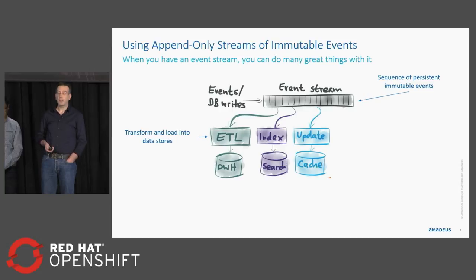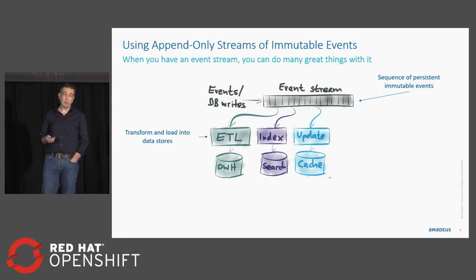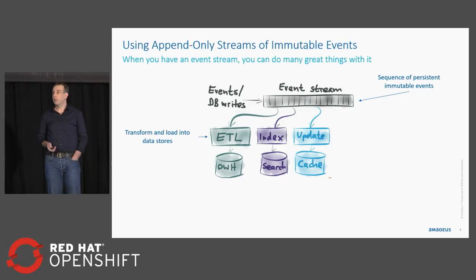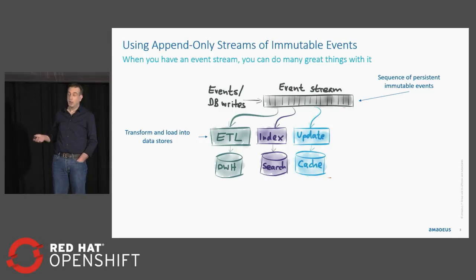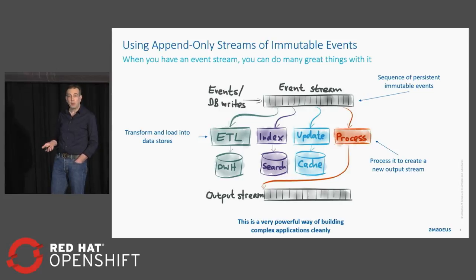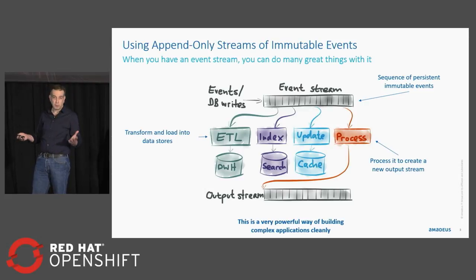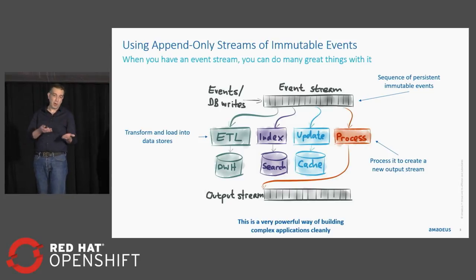You have the guarantee that what you consume is consumed exactly in the same order as it has been produced, and you need to produce immutable events because as it is persistent, you have the flexibility to be able to replay your events. Your application writes events on this event log, and you can have different processors that will handle those events. A very first obvious use case is to synchronize different data stores. Instead of putting stress on your application to write directly on those data stores, if your application is just logging the data change on this log, asynchronously in an eventually consistent manner, you can synchronize your different data stores.